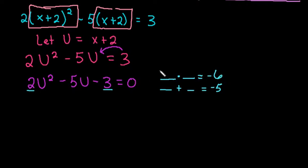Since this is negative, that tells me we need one positive and one negative. And since the addition is negative, that tells me the negative needs to be larger. So for this one, because of the fact that positive 1 times negative 6 gives me negative 6 and positive 1 plus negative 6 gives me negative 5, that would be the values that we are going to use.